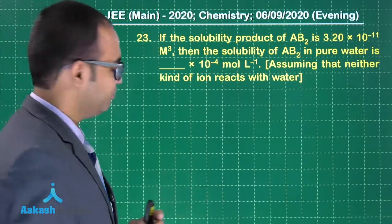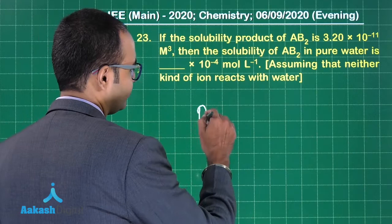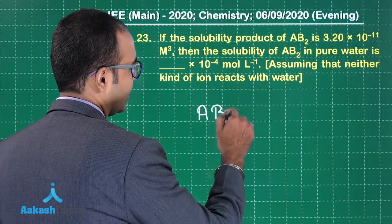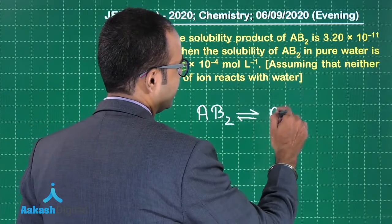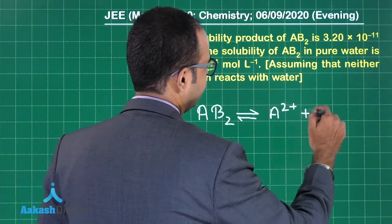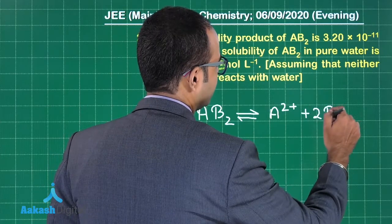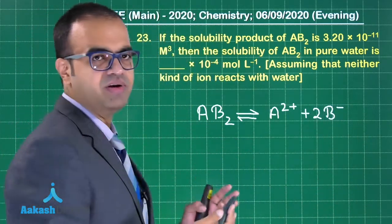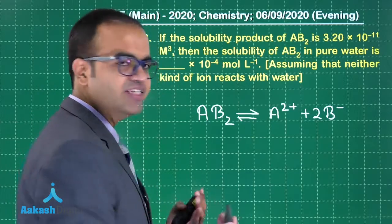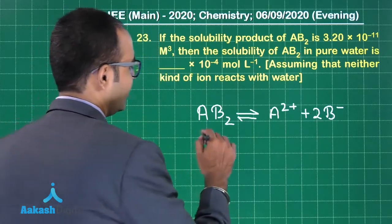How will we go about it? We have AB₂ giving A²⁺ + 2B⁻. Now if I write the equation for solubility product, what will be the equation for solubility product?